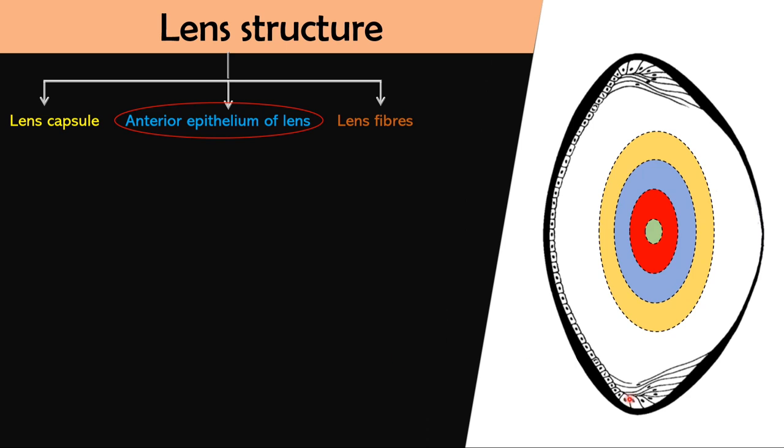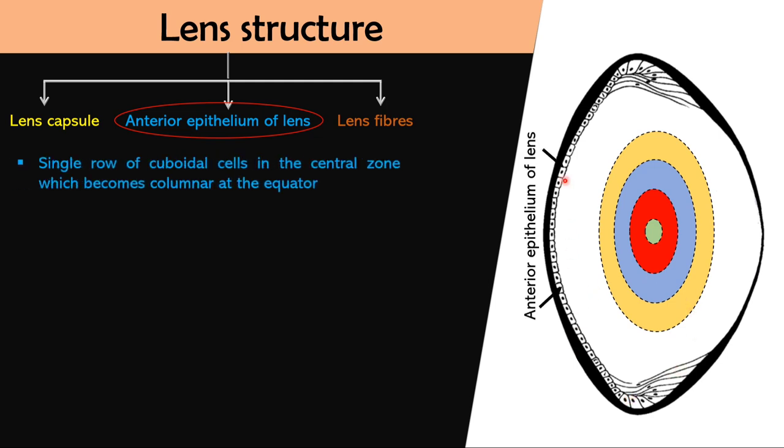Next is anterior lens epithelium which consists of single row of cuboidal cells in the central zone which becomes columnar at the equator. It is present just beneath the anterior lens capsule. Now if I am talking about anterior epithelium, there will be a thought of posterior epithelium also. But let me clear this that there is no posterior epithelium after birth.